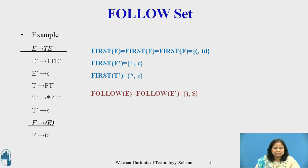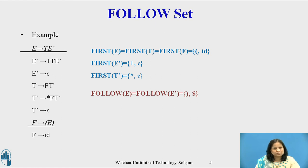Since in E derives T E', E' derives epsilon, by Rule 2 everything other than epsilon in the first of E' must be placed in the follow of T. Hence, the follow of T contains plus, right-parenthesis, and dollar.